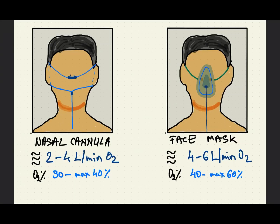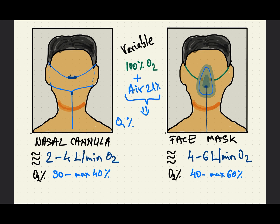When patients require oxygen, we can administer it at different concentrations depending on their requirements. The devices I will now present are variable oxygen delivery devices. Why are they variable? Because although we use 100% oxygen delivered from a source, this mixes with air which only has 21% oxygen, making the percentage of oxygen actually variable.